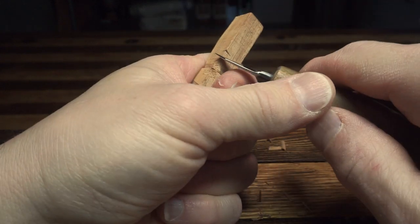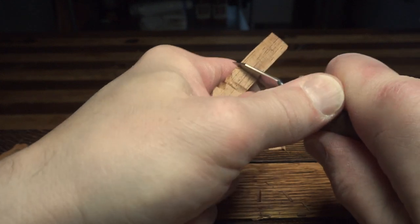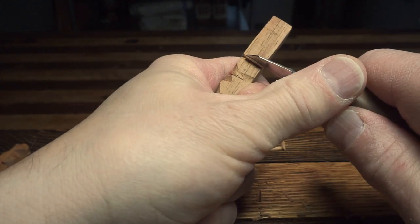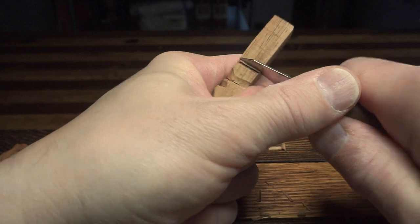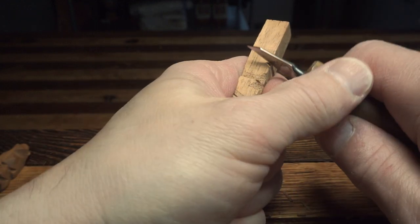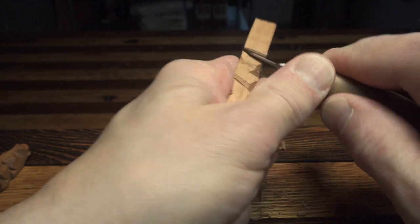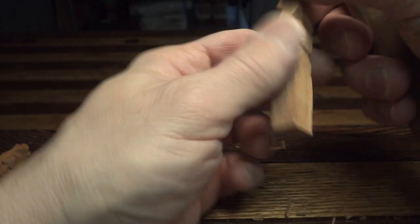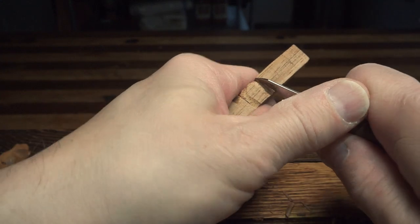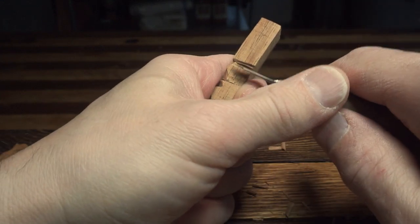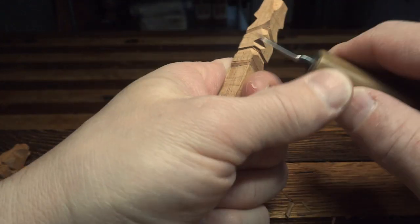Here we'll do the bottom lip. Again same idea. Just stop cuts cut right up to it. Both sides. And then we'll go back in here and after we get these stop cuts done we'll flatten it out a bit.